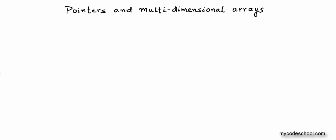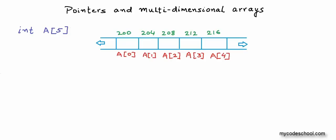To understand this concept, we first need to understand how multi-dimensional arrays are organized in computer's memory. Let's first go back to the organization of one-dimensional arrays in memory. When we declare a one-dimensional array — say an integer array 'a' of five elements — we are creating five different integer variables that we can name a[0], a[1], a[2], a[3], and a[4] as one contiguous block of memory.